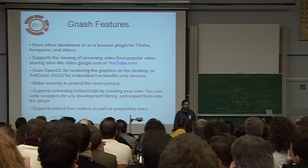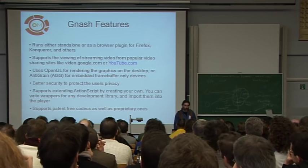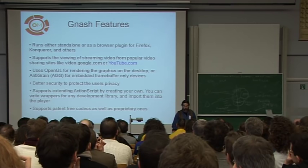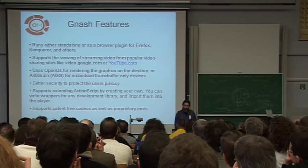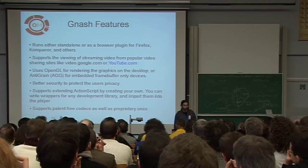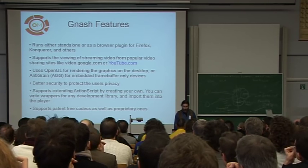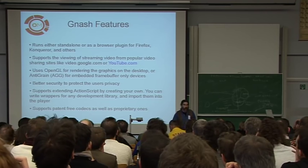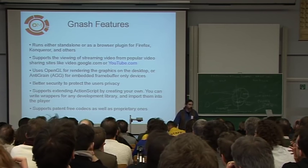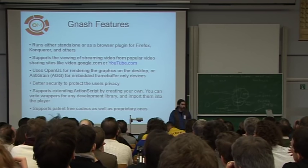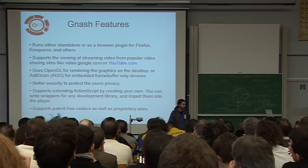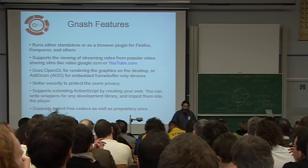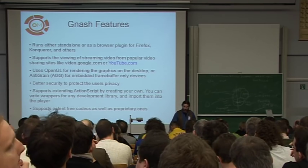We use OpenGL for hardware accelerated graphics, AGG, and Cairo. We have a lot of work on security and a lot of different stuff like that. We also support using Ogg Vorbis and Theora streaming for Wikipedia and Internet Archive, instead of just using all that proprietary stuff.